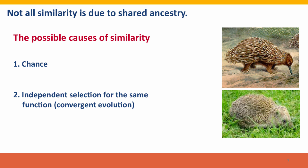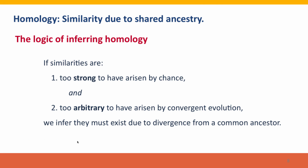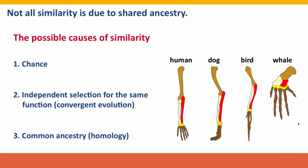Similarity can also arise in independent features that become similar because natural selection is selecting for the same function. Here we see two animals: the Australian echidna, whose only close relative is the platypus and which lays eggs, and the European hedgehog. Both of these animals have transformed their fur coats into spines. We know that this is not homologous because we know a great deal about the ancestors of echidnas and the ancestors of hedgehogs, and they don't have spines. They have independently been selected for spiny coats as a form of defense. Finally, similarity can be due to common ancestry — the kind of homology I described previously.